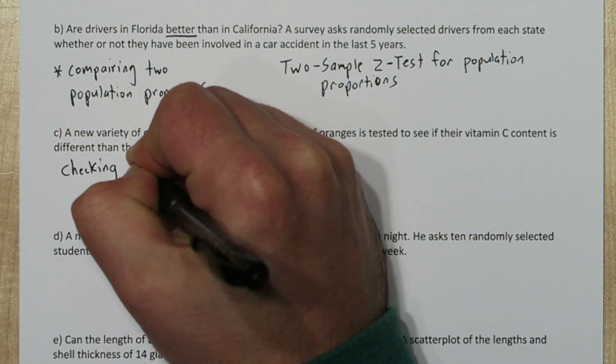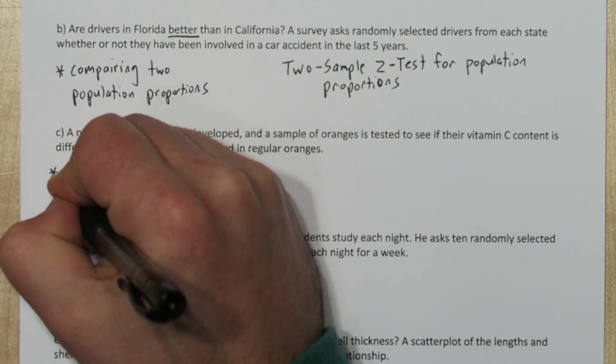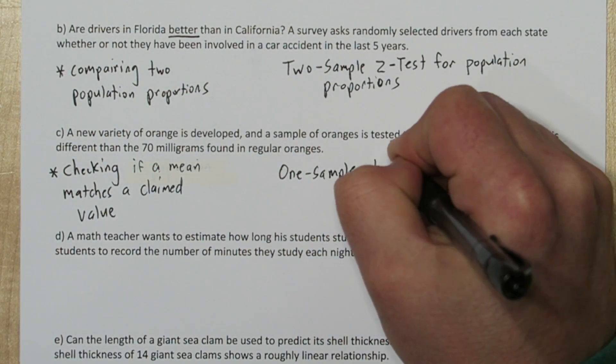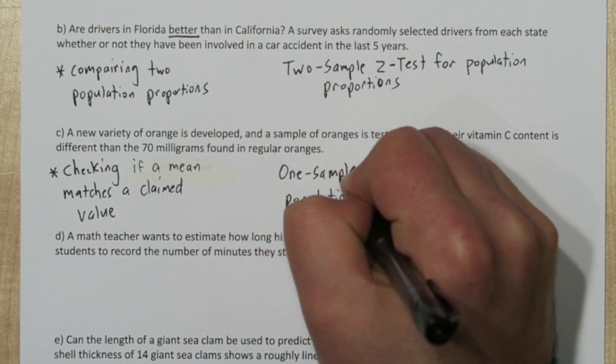Now the new variety of oranges is a population, and because we're taking a sample from it and testing it against some claim, this is a one-sample t-test for population mean.